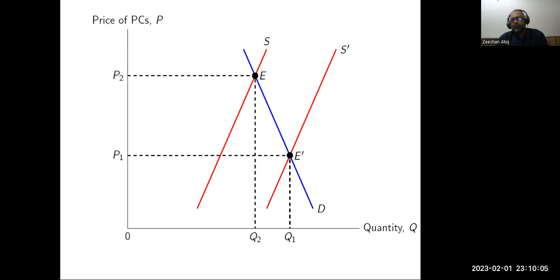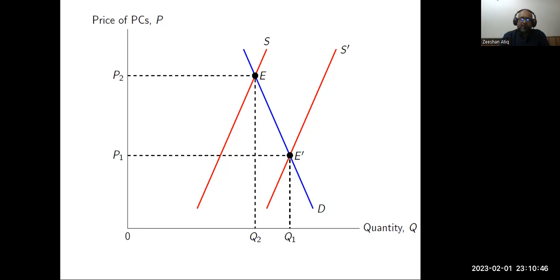This cost of production is a factor that we keep constant when we define the supply and price relationship. Whenever this cost of production changes, you can actually supply more. Now, when the supply curve shifts, the equilibrium changes from point E to E-dash. For a PC manufacturer, this change causes prices to go down and equilibrium quantity to go up, because the cost of production is going down. This decrease in the cost of production helps producers produce more as they increase supply, and their profit margins increase.